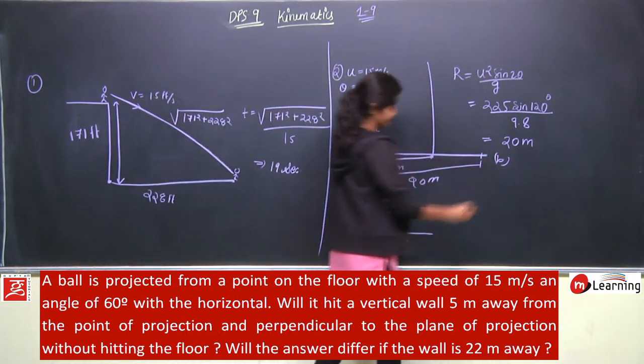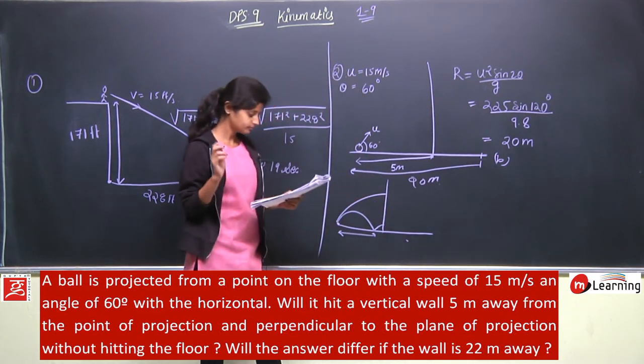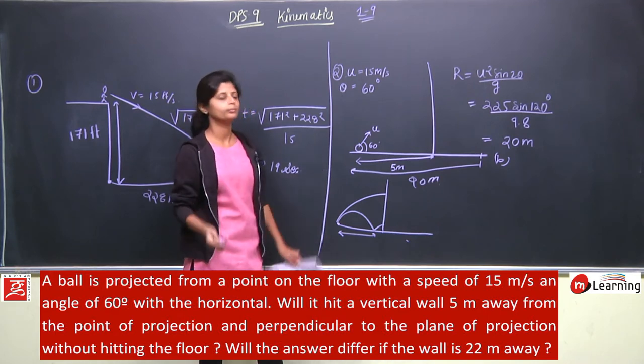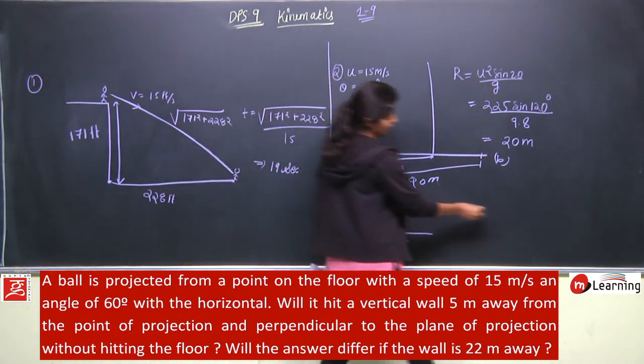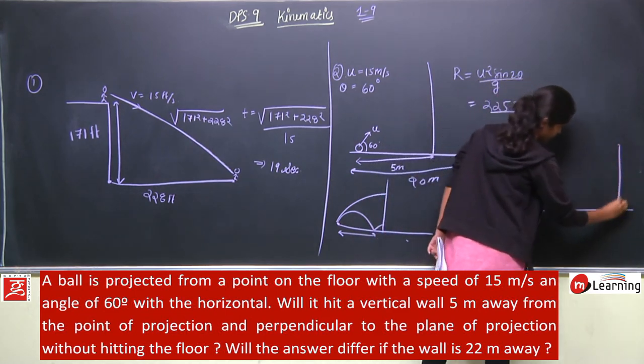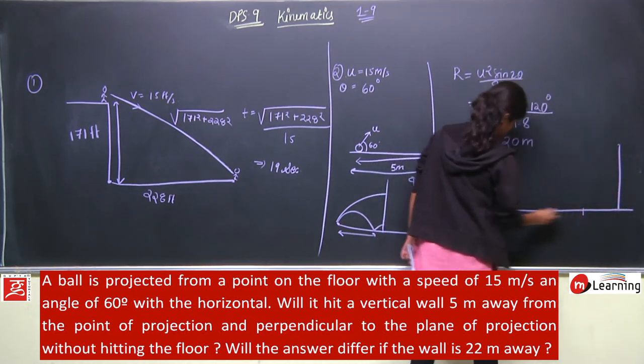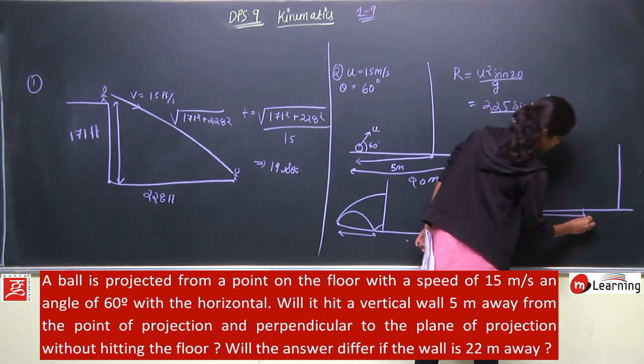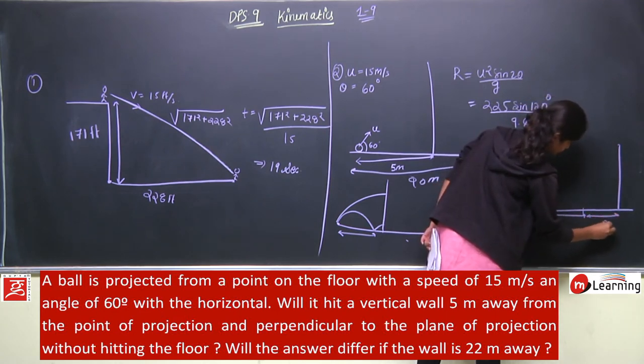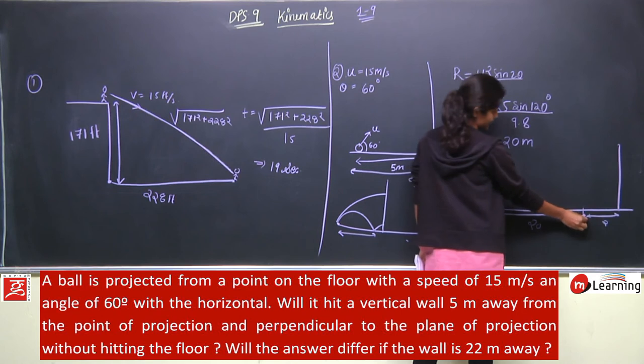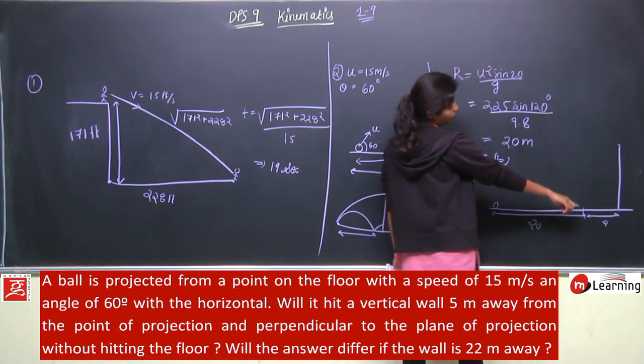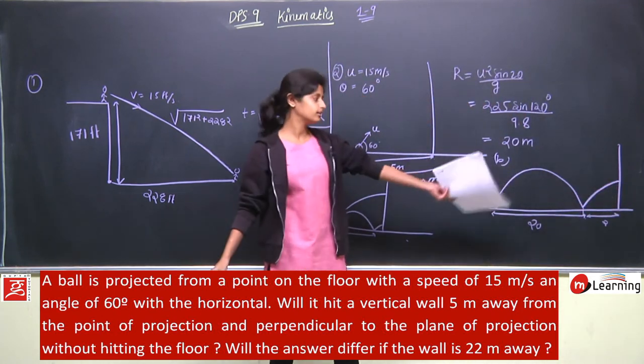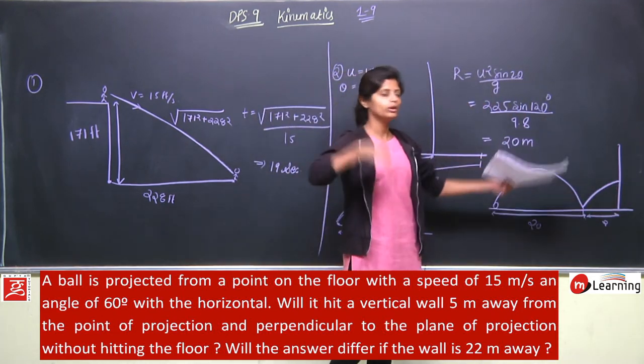B part is will the answer differ if the wall is 22 meter away? Agar wall 22 meter away hai, yahaan pe hai wall aur range yahaan tak ki hai. This is 20 and this is 2 meter, 22 meter ye distance. Agar is ki range kya hai? 20 meter pe hai. Aur agar wall 22 meter ke distance pe hai, to is ki trajectory kuch is type ki hogi.